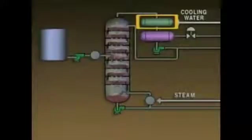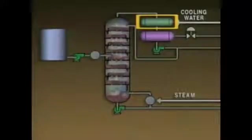If a condenser problem is suspected, the condenser should be checked and corrective action should be taken if necessary. Changes in the tower's differential pressure may have other causes in addition to the ones we've identified, so it's important to carefully evaluate any situation before corrective action is taken.